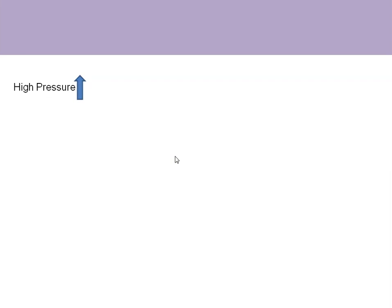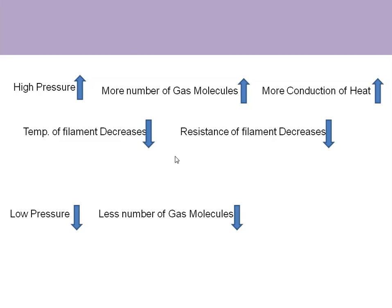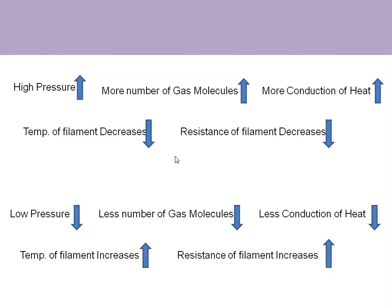When there is high pressure, more gas molecules are present, causing more conduction of heat by those molecules, so the temperature of the filament decreases and its resistance also decreases — because tungsten has a positive temperature coefficient of resistance. Conversely, at low pressure, fewer gas molecules are present, less heat is conducted, so the filament temperature increases and resistance increases. This increase or decrease in resistance unbalances the bridge, and the unbalance is measured as the voltage output of the Wheatstone bridge.